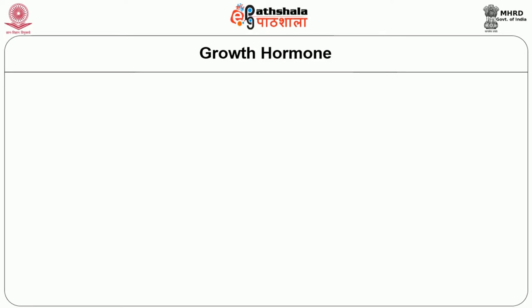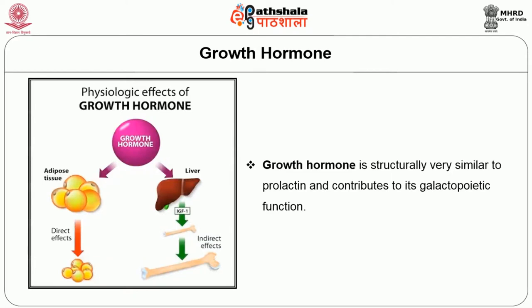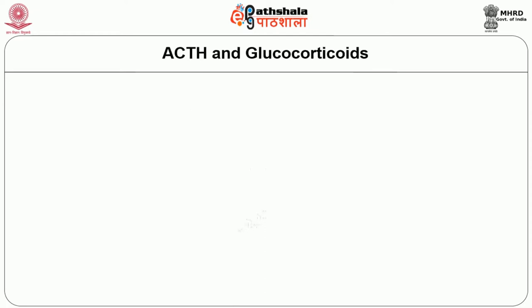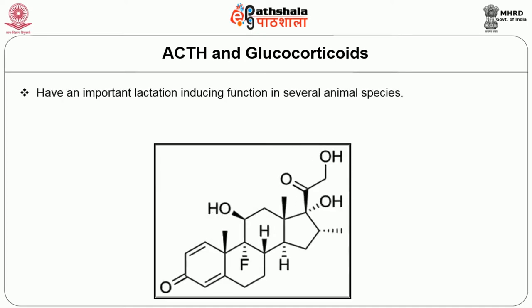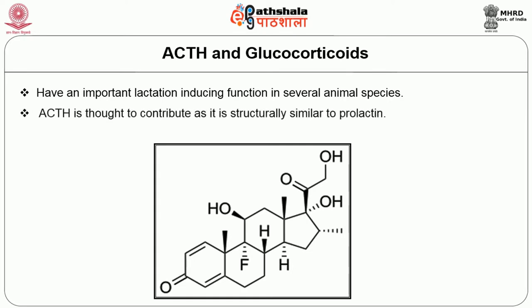Growth hormone (GH) is structurally very similar to prolactin and contributes to galactopoietic functions. The next hormone is adrenocorticotrophic hormone (ACTH) and glucocorticoids, which have important lactation functions across several animal species. ACTH is thought to contribute as it is structurally similar to prolactin.